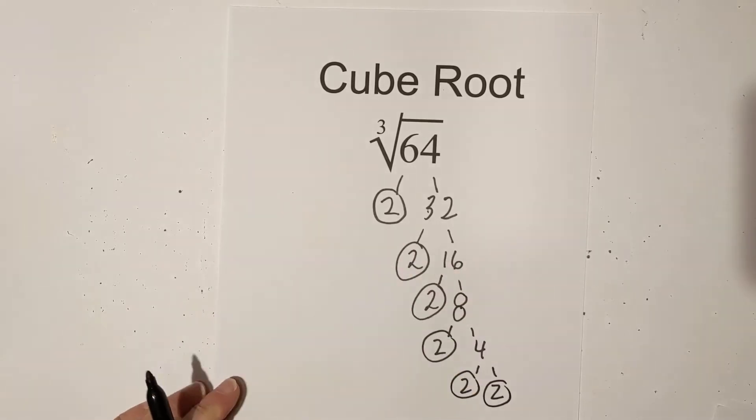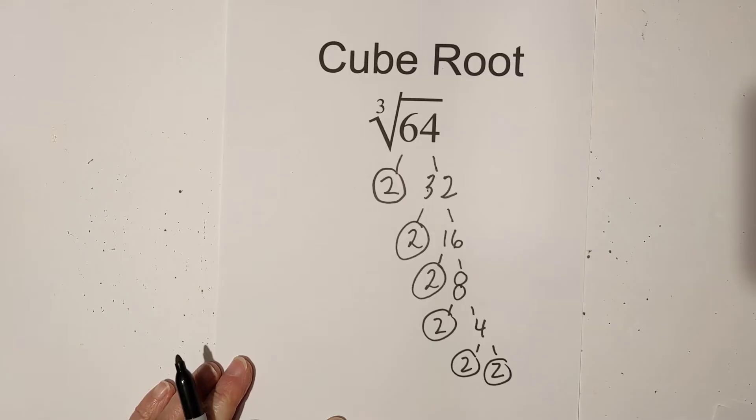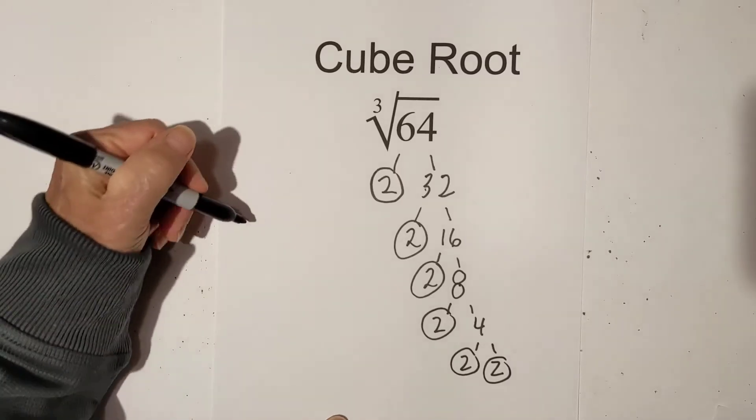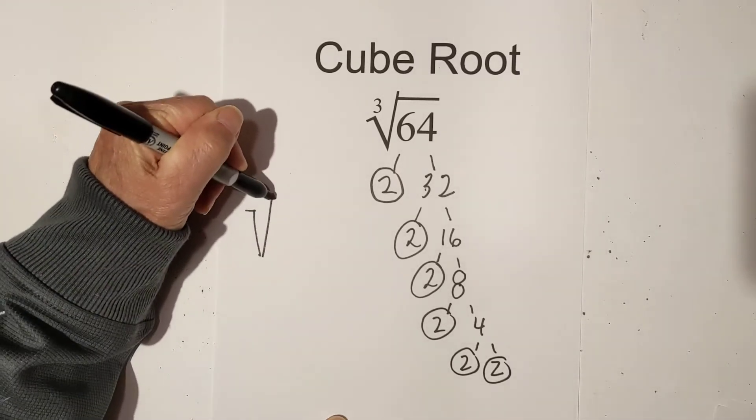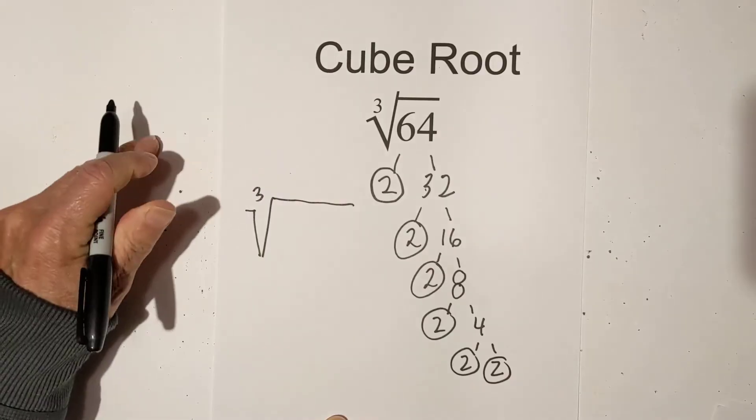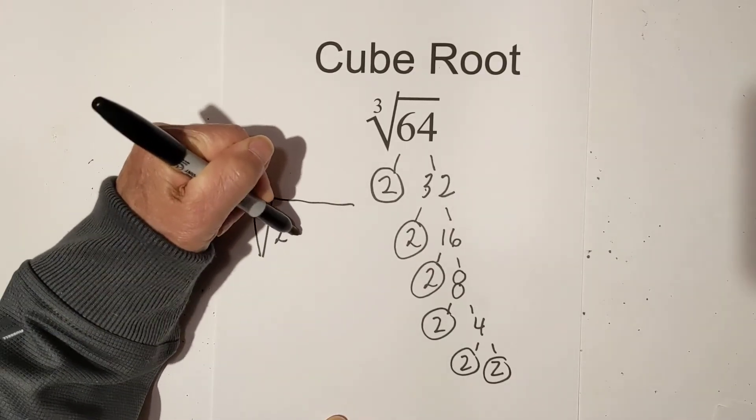So now I have all the prime numbers of 64. What I can do now is put them under the cube root sign, and I have 6 twos.